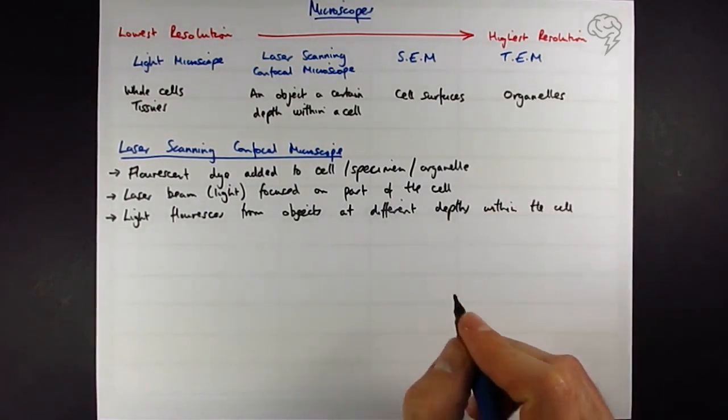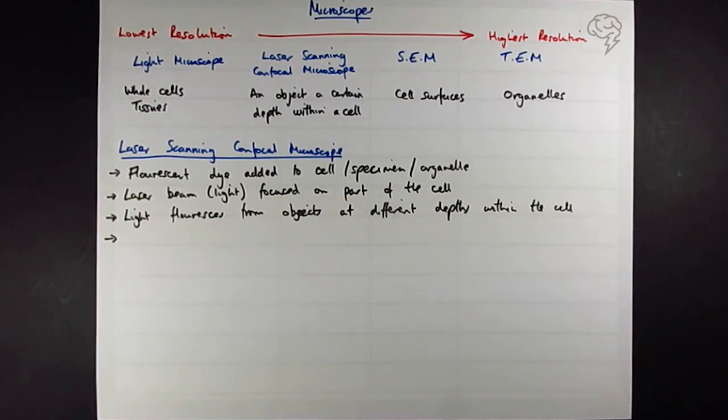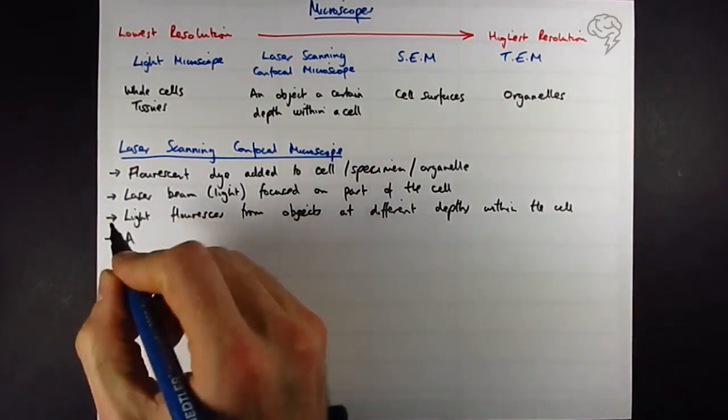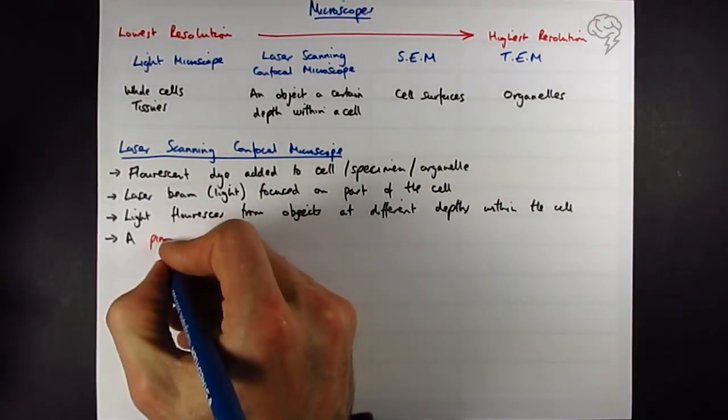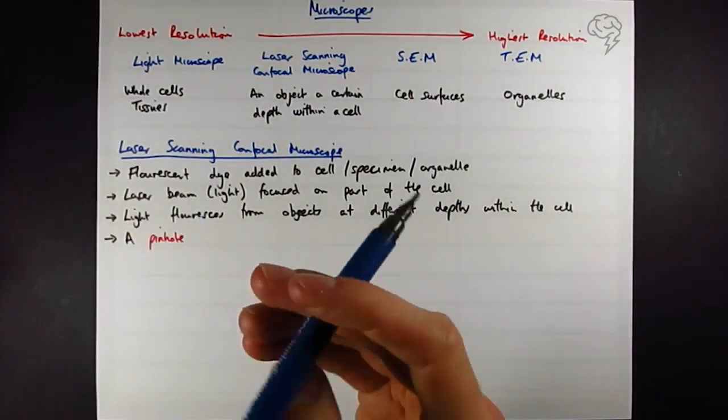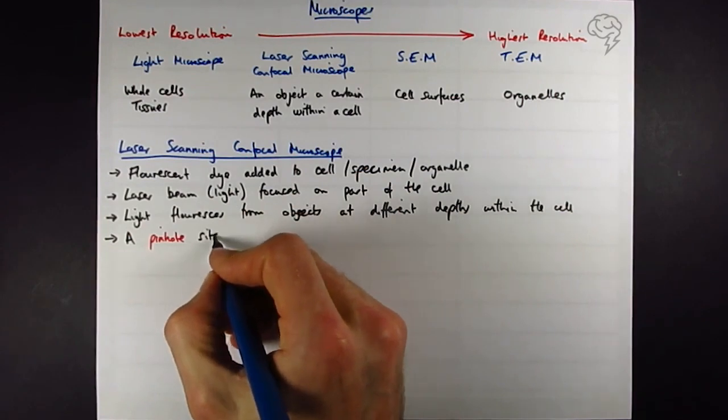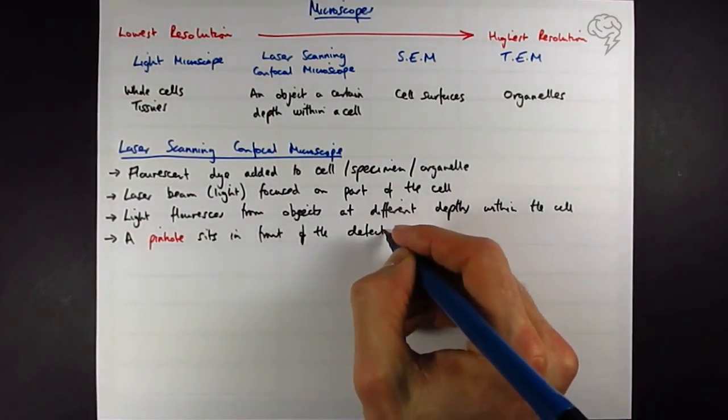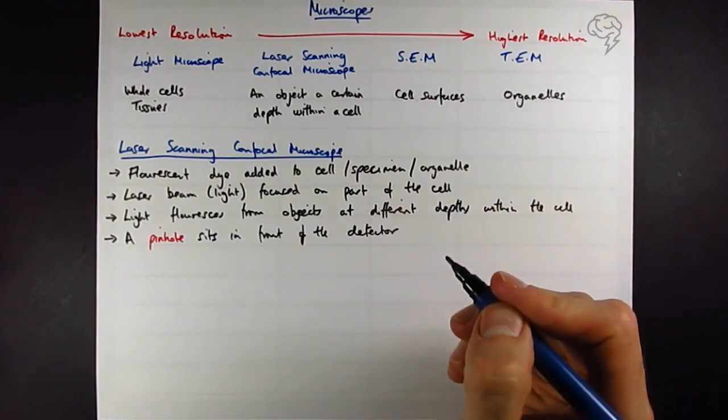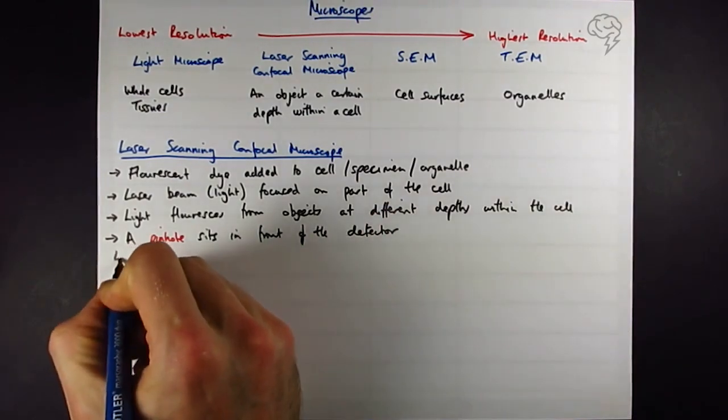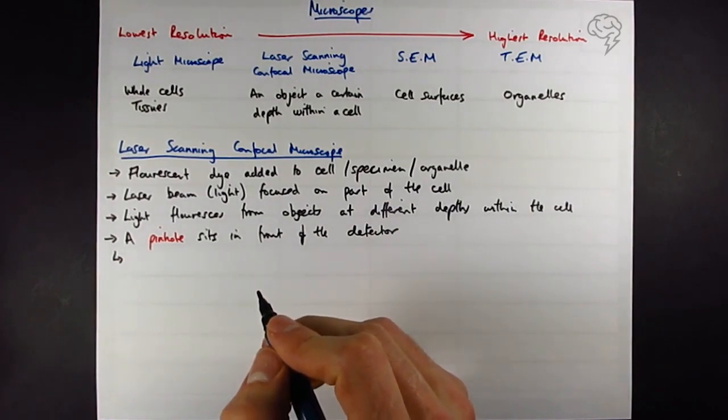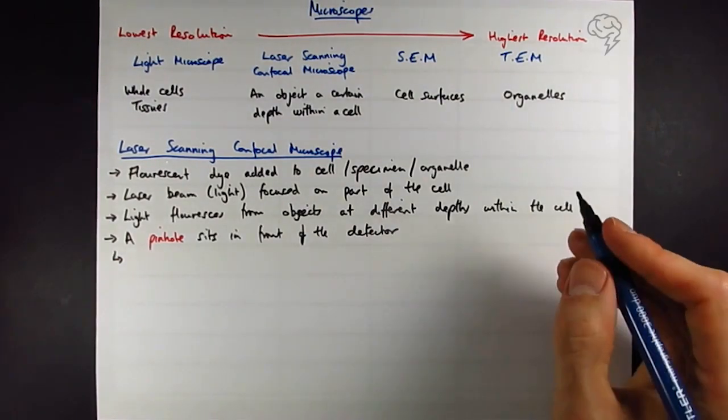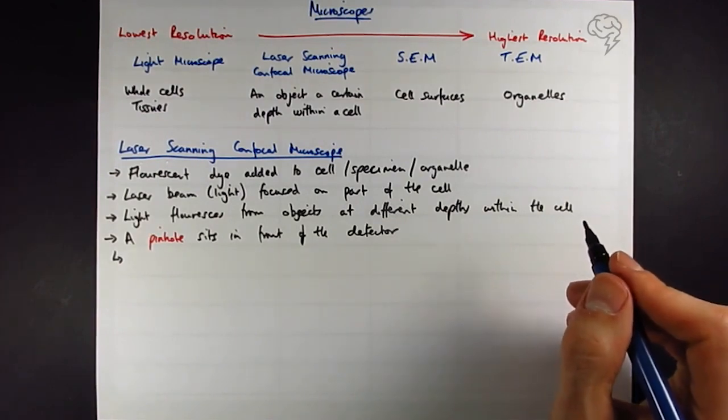And then we can say a pinhole, which is sort of a key term here, a pinhole sits in front of the detector which is going to catch this fluorescent light. And this is going to eliminate the light that comes from other depths within the cell. I'm going to actually draw the image and then the diagram and then you're going to have a better idea of what I'm talking about here.